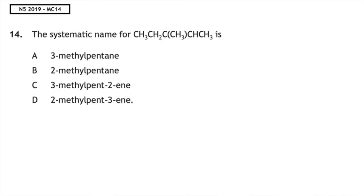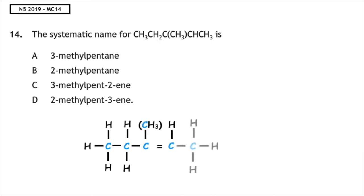This past paper question is from National 5, 2019, multiple choice 14. The systematic name for a given shortened structural formula is asked. Because they've given us a shortened structural formula, we have to change that into the full structural. We have a CH3, CH2, C with a CH3 branch, CH, and a CH3. We look for our longest carbon chain including the carbon-to-carbon double bond, which is five. The lowest position that the carbon-to-carbon double bond can be on is position two, so the answer is multiple choice C: 3-methyl-pent-2-ene.